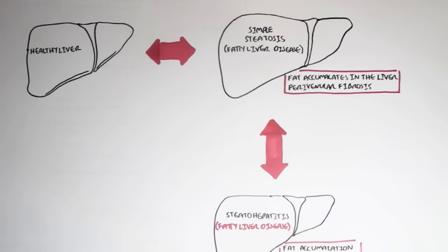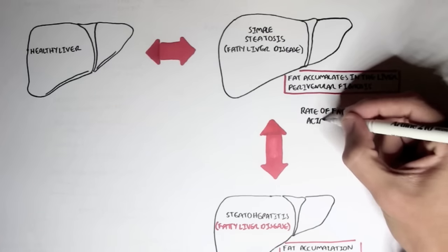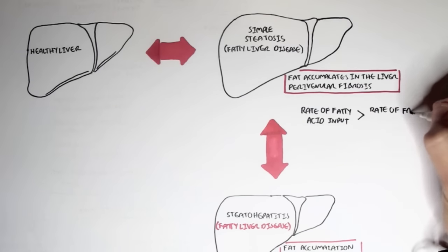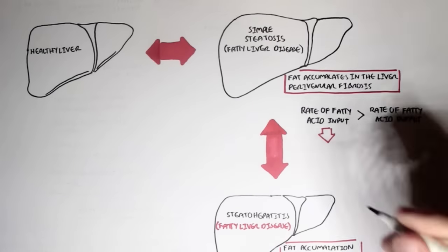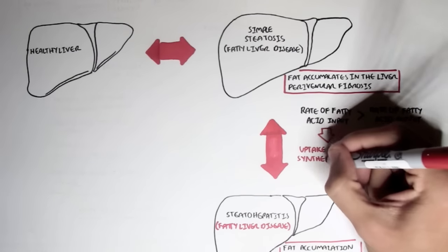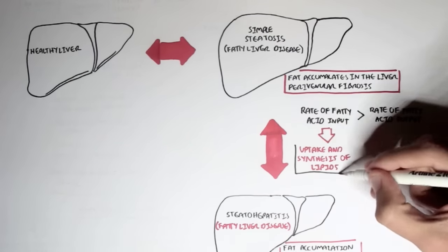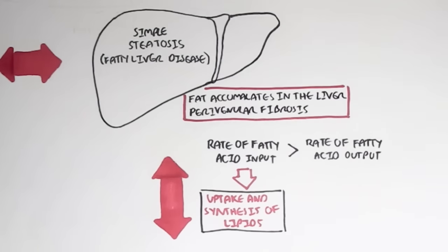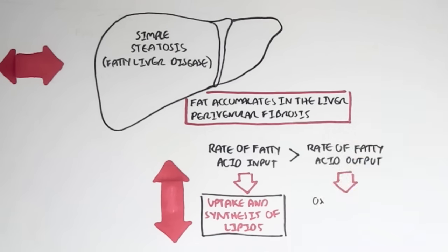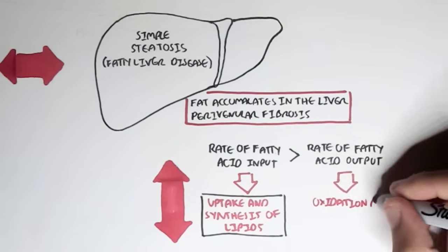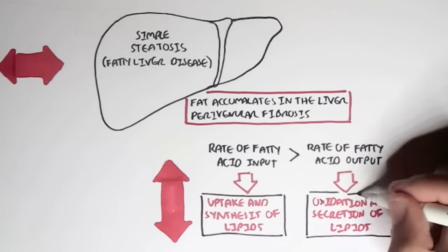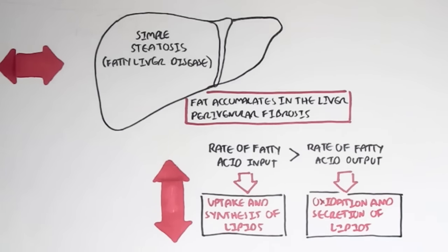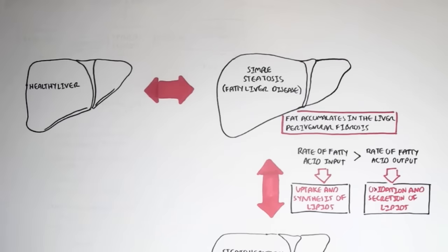So how do we get to the state known as steatosis? Well, this is essentially when the rate of fatty acid input to the liver is greater than the rate of fatty acid output from the liver. The fatty acid input can be the uptake and the synthesis of lipids within the liver, the output being oxidation and secretion of lipids out of the liver. And so that is why in a healthy liver, we have normal levels of fatty acids.